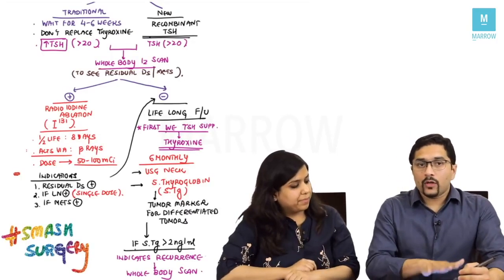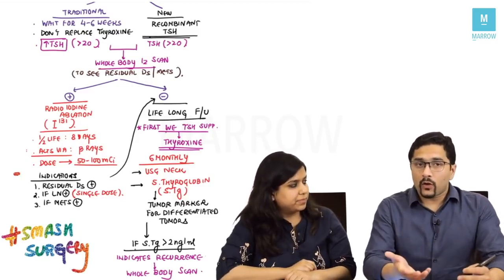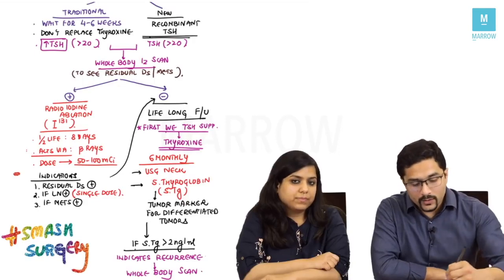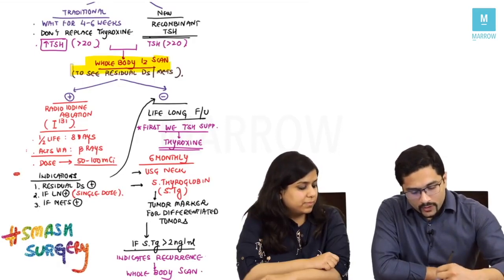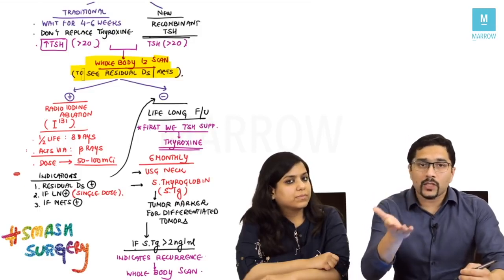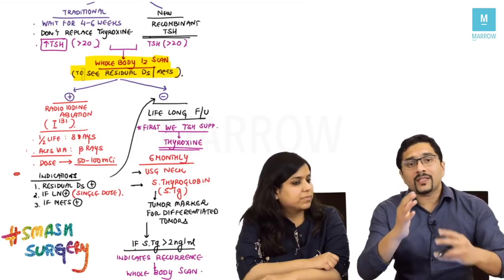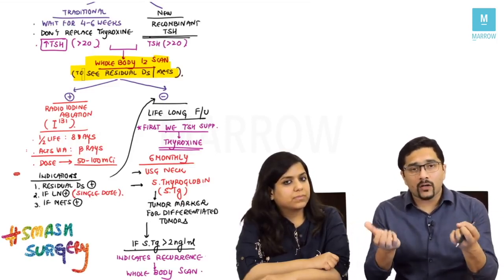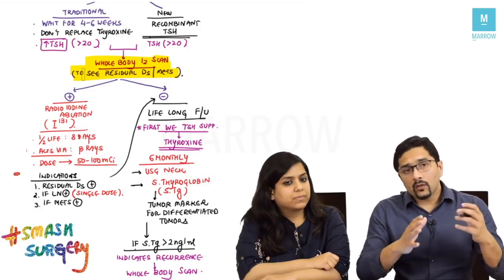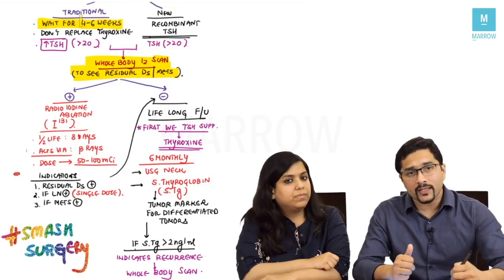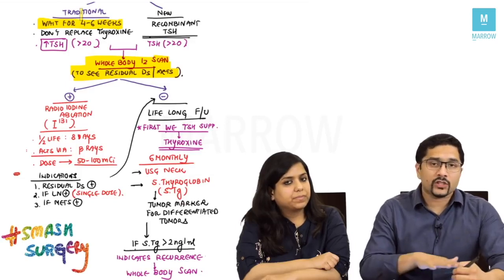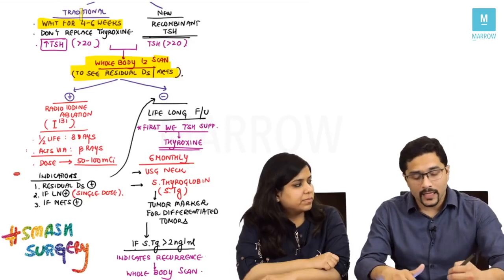After the surgery report, the treatment is not finished — we need to follow up the patient as well. After surgery, a whole body iodine scan is done to look for residual disease or metastasis. Before this scan, we need to ensure the TSH is more than 20, so that any residual thyroid tissue is starving for iodine and will actively take it up. A latest option is to give a recombinant TSH injection, which boosts TSH within two days, avoiding the four to six weeks of hypothyroid symptoms.